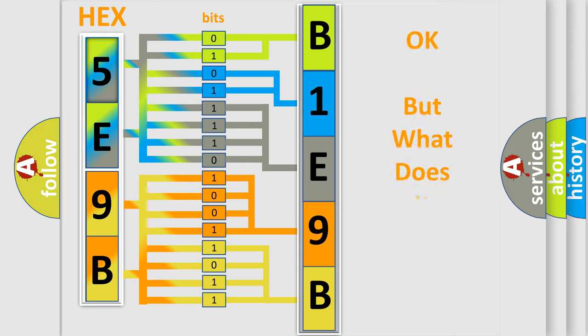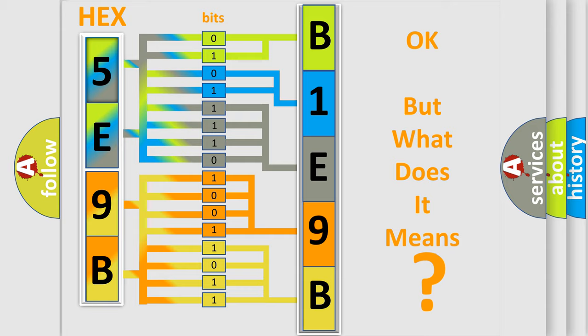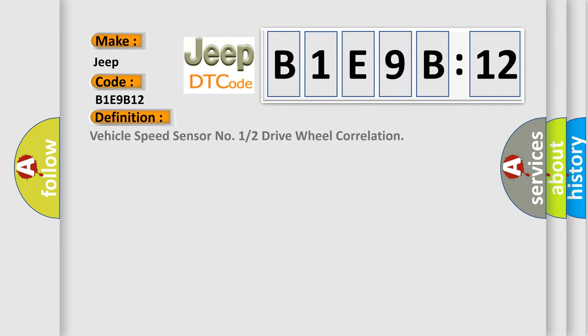The number itself does not make sense to us if we cannot assign information about what it actually expresses. So, what does the diagnostic trouble code B1E9B12 interpret specifically for Jeep car manufacturers? The basic definition is: vehicle speed sensor number one or two drive wheel correlation.